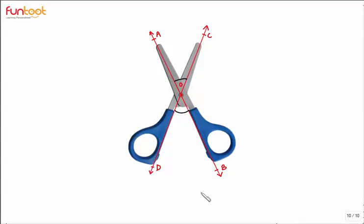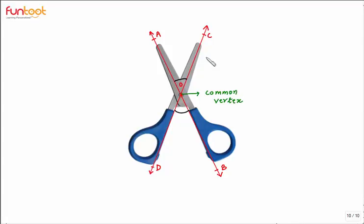The first important property is that vertically opposite angles have a common vertex. Here we can see that point O is the common vertex. They don't have any common arms — so in a pair of vertically opposite angles, there is no pair of common arms.